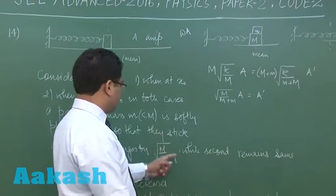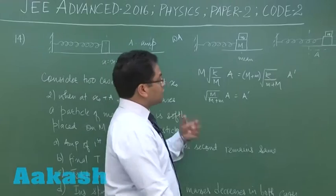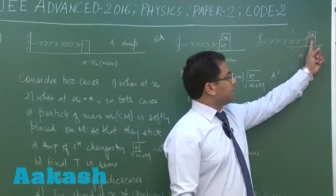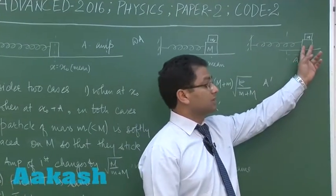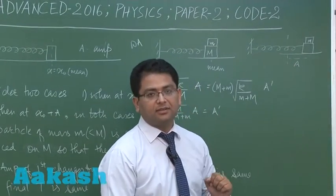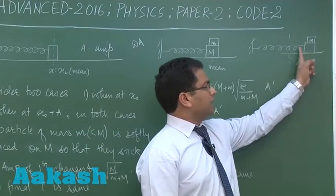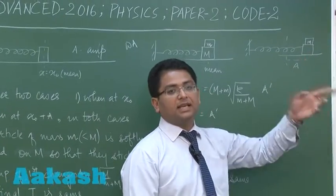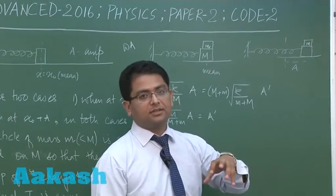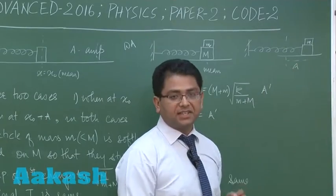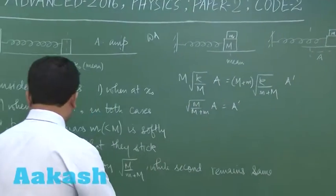So that is coming out to be correct. And in case two the amplitude will not change because the block is kept at the extreme position. And at the extreme position the velocity is zero. So if it was the single block it had velocity zero. Even in case of two blocks the velocity would be zero. So amplitude would be the same because this is where it is instantaneously at rest. So first option is correct.